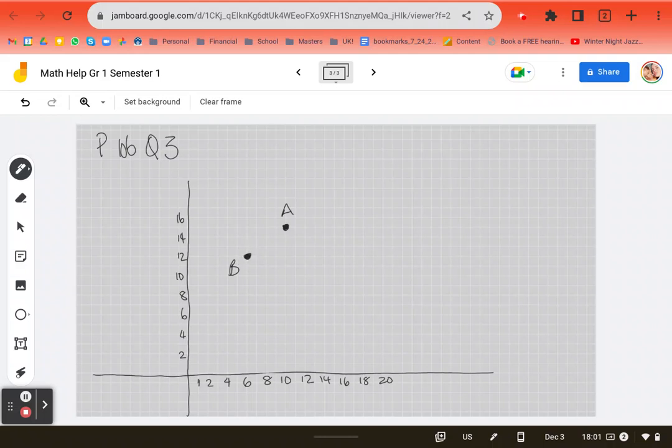Now it says, find the length of AB. So find this length. How would I find that length?